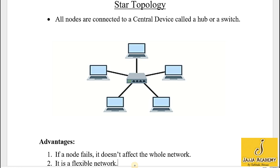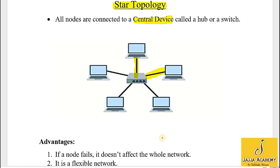Let's discuss the star topology. All nodes are connected to a central device. This central device can be a hub or a switch. Both hub and switch are hardware devices used to connect different computers or nodes of a network. In this diagram, you can see every computer is connected to this central device — they are not directly connected to each other, but through the central device.